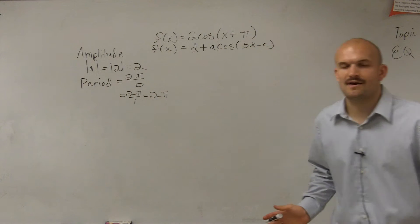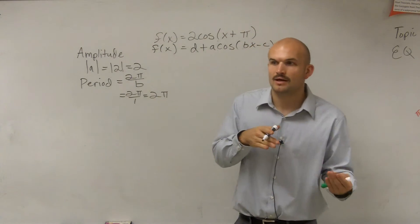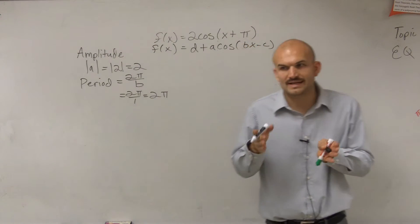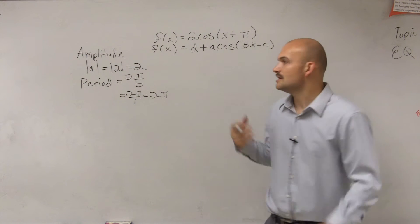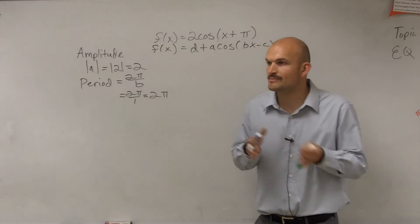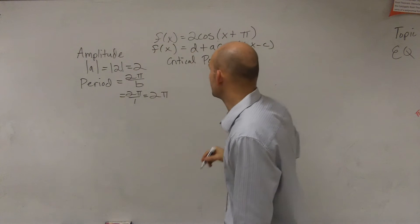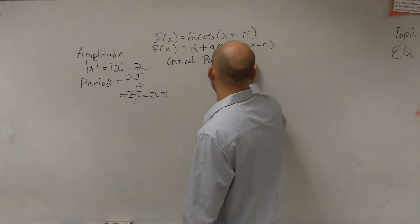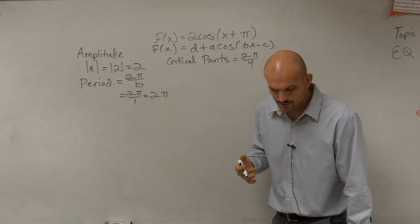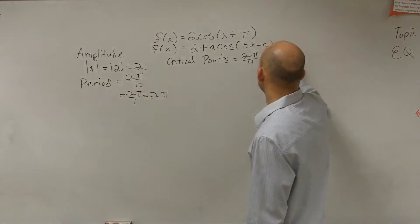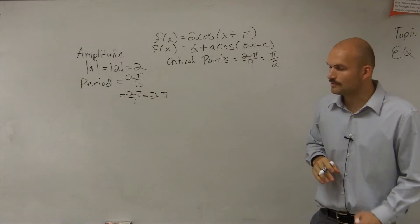Now, when making a graph, remember when we looked at the parent graphs there were critical points — a maximum, a minimum, and x-intercepts — and each one of those critical points was an equal distance apart. Once I determine the period, I want to find the distance between my critical points. I take my period of 2π and divide it by 4, because there are four critical points in one period of our sine and cosine graph. So the distance between my critical points is going to be π/2.